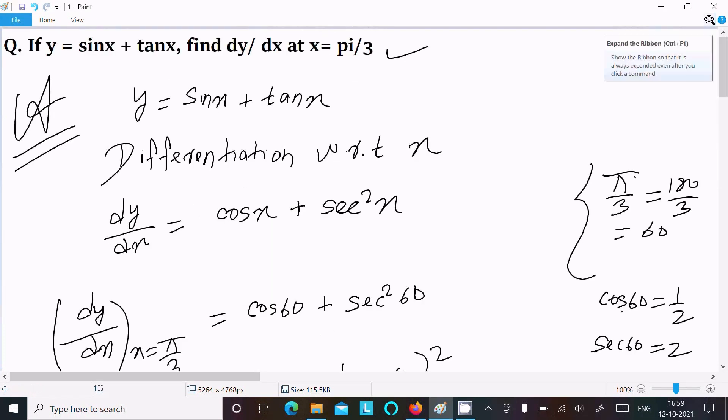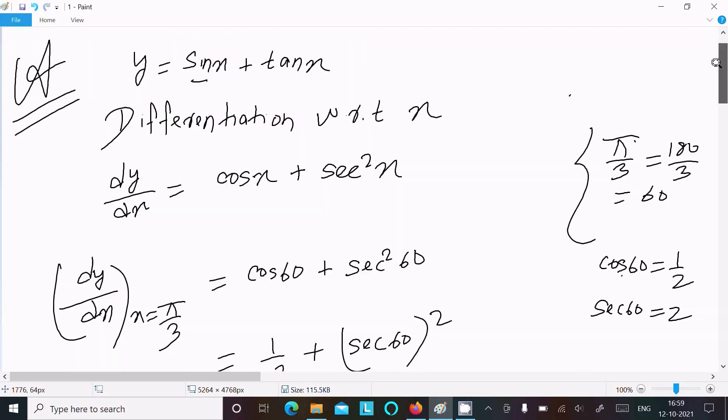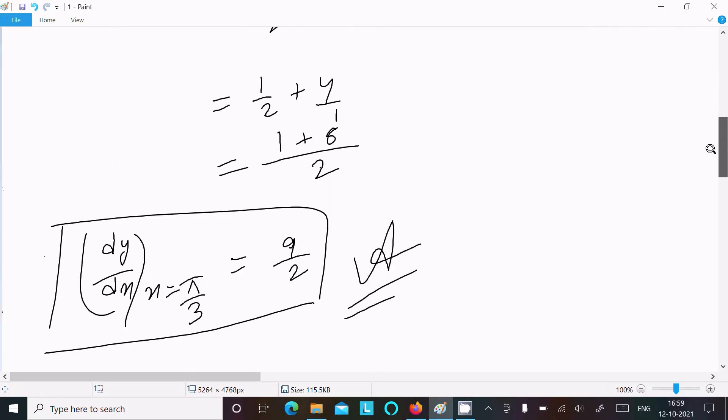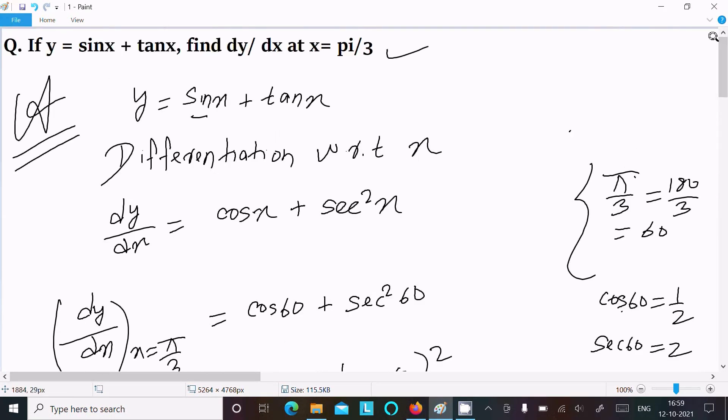Okay, so first here write the given, do the differentiation. The formula: sin differentiation is cos x, and tan is sec² x. Now calculate dy/dx at π/3. So put the value π/3, that is 60 degrees. Now put the value, and after doing the calculation, you can get 9/2.